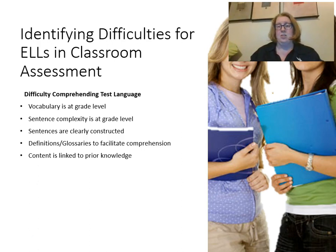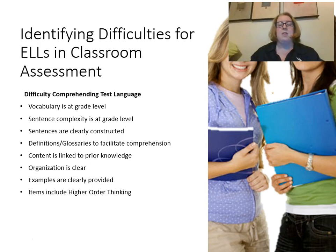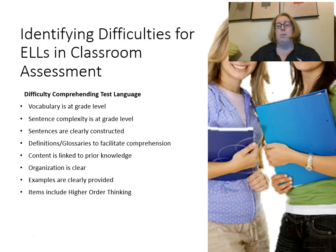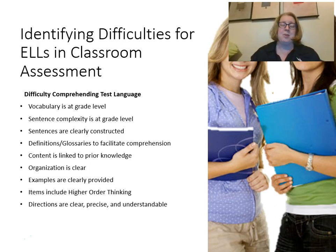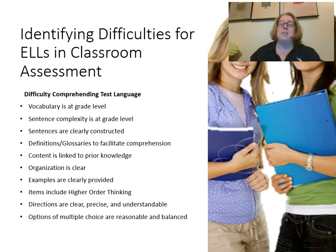We want to link content to prior knowledge and scaffold understanding with clear organization and clear examples. When we talked about modifications for special education students, we said we might need to lower the level of thinking to accommodate students with intellectual disorders. But for English language learners, we should not be changing the level of thinking required — we should just be changing the level of language. We should still be asking them to think, analyze, and synthesize at a high level; we just want to allow them to access that through their native language or through English language supports. Make sure directions are clear and that options are reasonable and balanced, because wrong answers will be less obvious for English language learners.